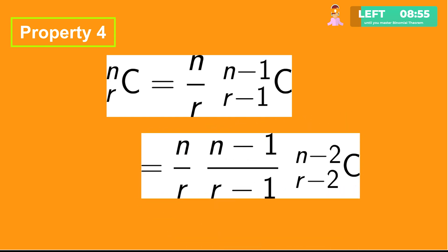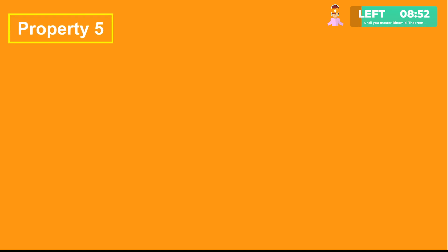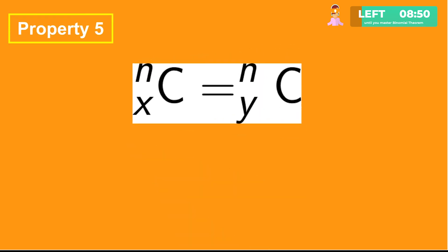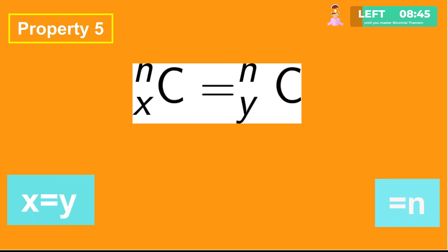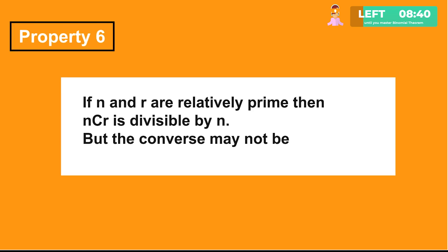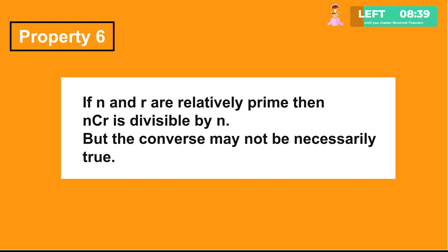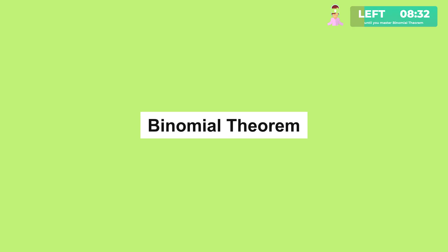Extending property four: nCr equals n by r into (n minus 1) by (r minus 1) into (n minus 2)C(r minus 2). Fifth property: if nCx equals nCy, then either x equals y, or x plus y equals n. Sixth property: if n and r are relatively prime numbers, then nCr is divisible by n, but the converse may not necessarily be true.